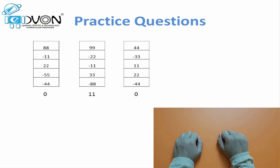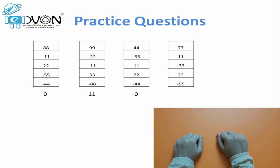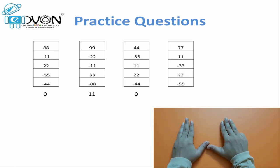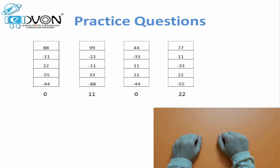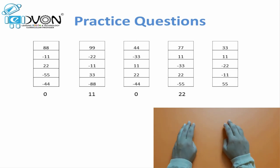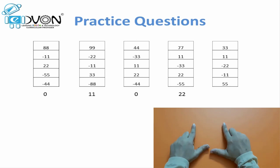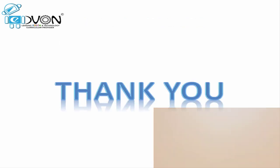We will practice two more questions. 77 plus 11 minus 33 plus 22 minus 55 — the answer is 22. Last question: 33 plus 11 minus 33 plus 11 minus 22 minus 11 plus 55 — the answer is 66. Hopefully the topic of similar values is clear to everyone. Keep practicing for better speed. Thank you for watching the video.